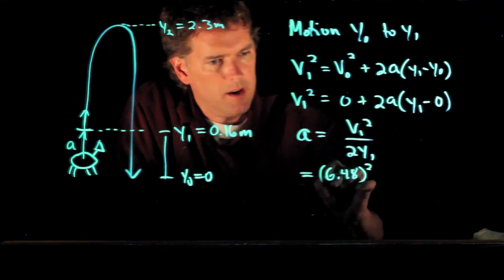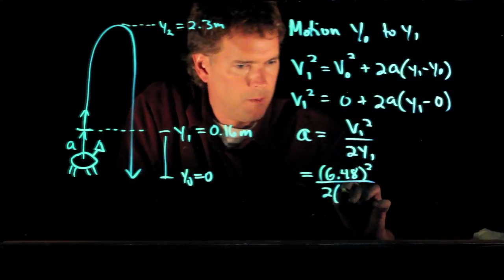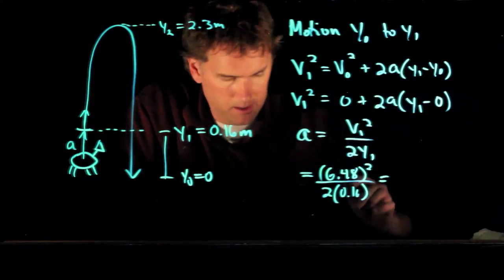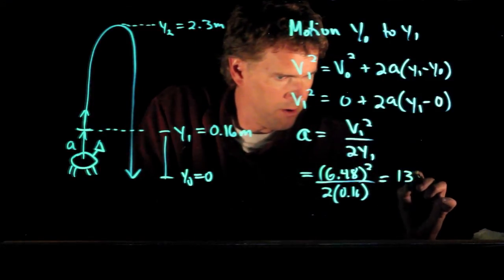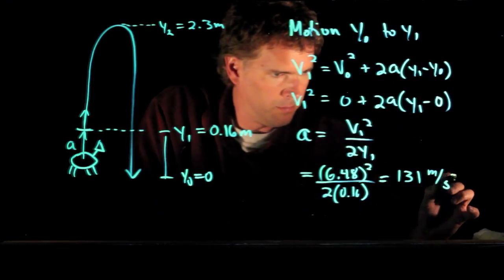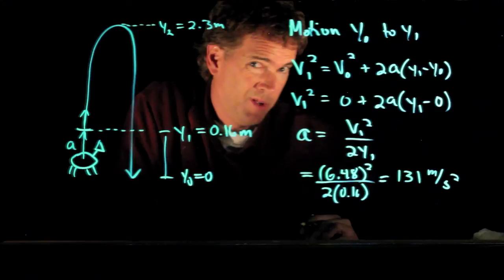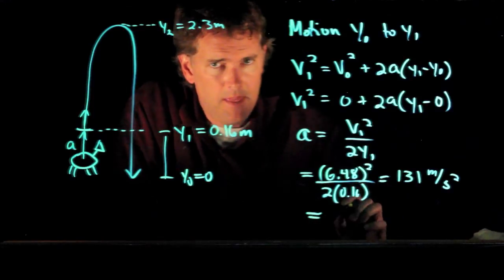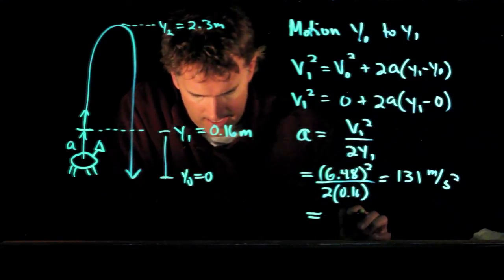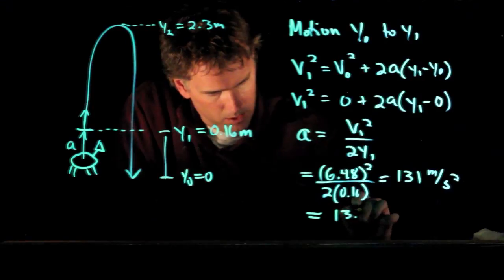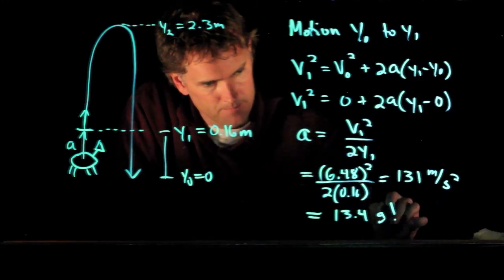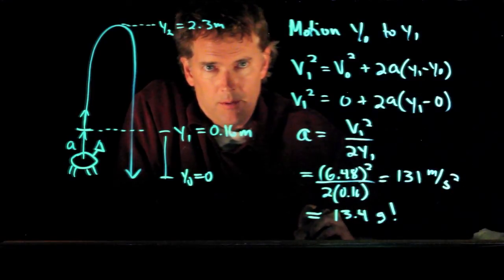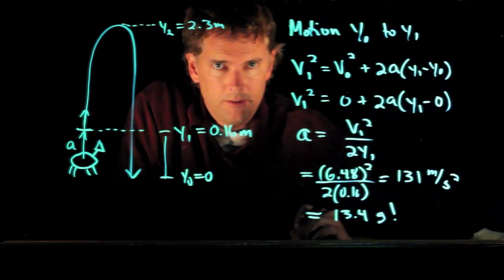We're going to square that, we divide by 2y1 which was 0.16, and if you plug all that into your calculator you should get 131 meters per second squared, which is a pretty big number, right? That's the acceleration of this animal. If I divide that by 9.8 I get 13.4 g—that is a pretty phenomenal acceleration from a little animal. All right, hopefully that one makes sense. If not, come see me in my office. Cheers.